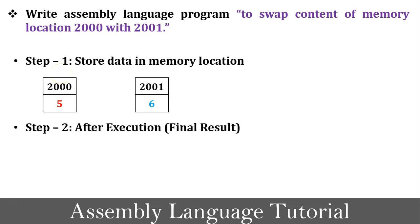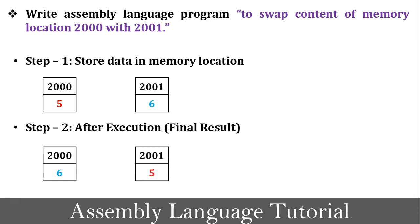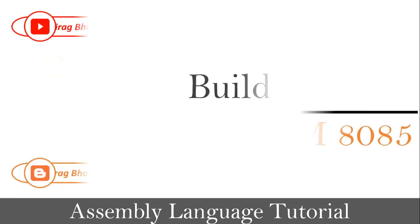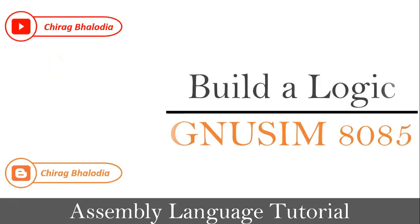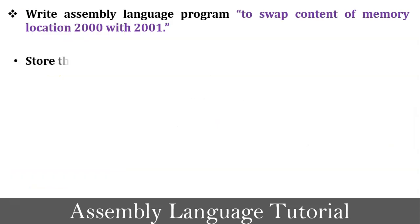After execution of the program, it generates the final result. The final result must be: value 6 is stored into memory location 2000 and value 5 is stored into memory location 2001. This is the meaning of the program definition. Now let's build the logic for the program.